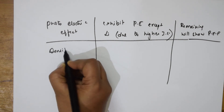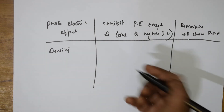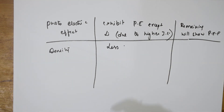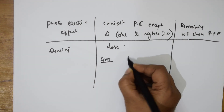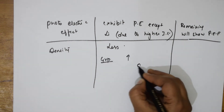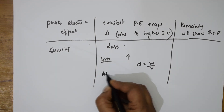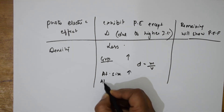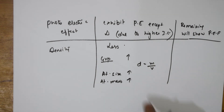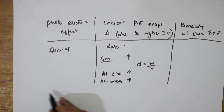When speaking about density, the densities of alkali metals are generally low. In a group, density increases going down. Density equals mass divided by volume. Going down the group, atomic size increases and atomic mass also increases. When atomic mass increases, density also increases.